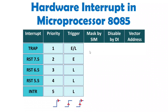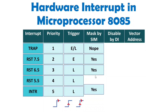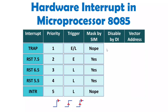When we talk about masking by SIM instruction, you can mask RST 7.5, RST 6.5, and RST 5.5. TRAP and INTR cannot be masked. Regarding disabling interrupts, only TRAP cannot be disabled because it has highest priority — you cannot disable TRAP. The rest of these interrupts can be disabled.